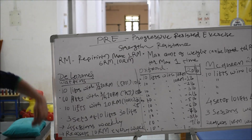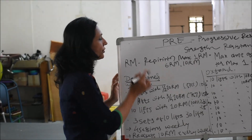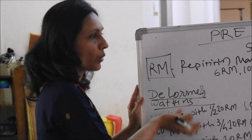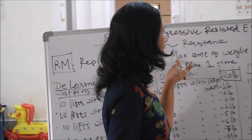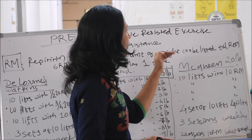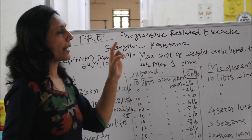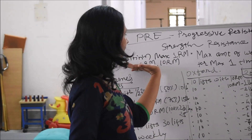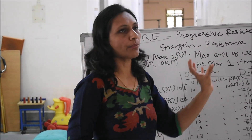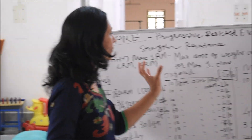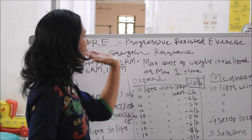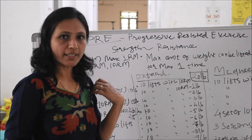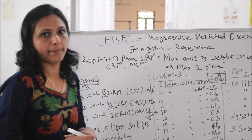To summarize: you need a clear understanding of repetition maximum. One RM is the maximum amount of weight that can be lifted in full range of motion for a maximum of one time. Six RM is the maximum weight that can be lifted in full range of motion for a maximum of six times. Ten RM is the maximum weight that can be lifted in full range of motion for a maximum of 10 repetitions. Understanding these concepts is key to applying progressive resistance exercise.